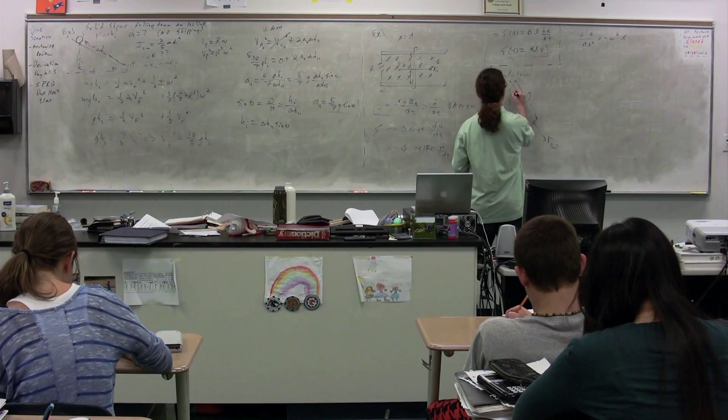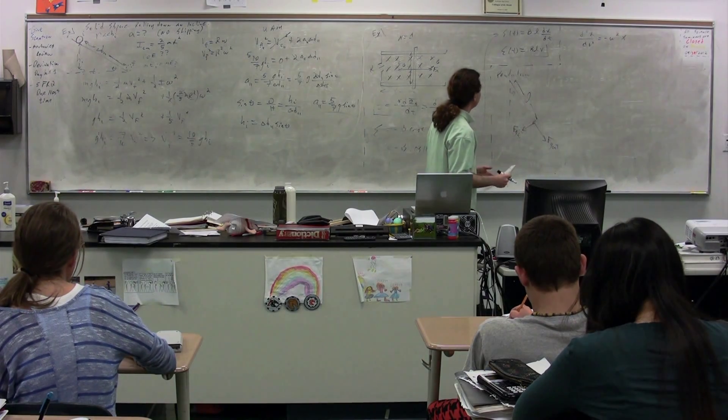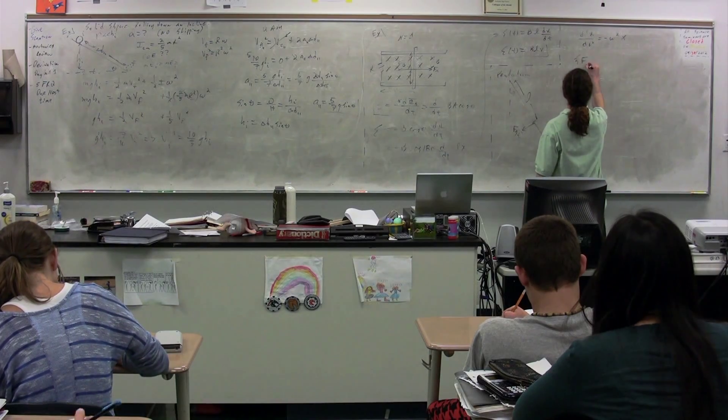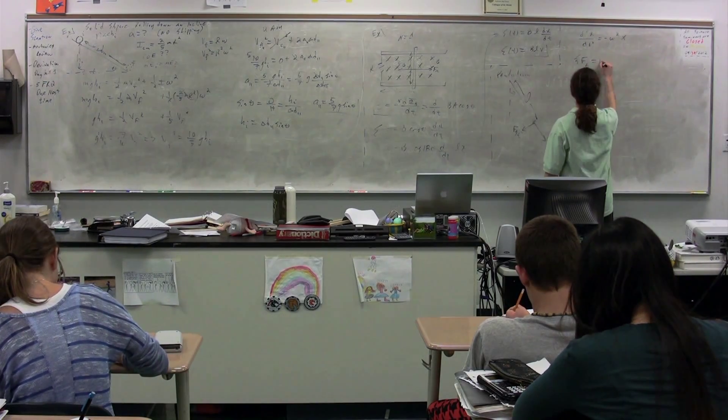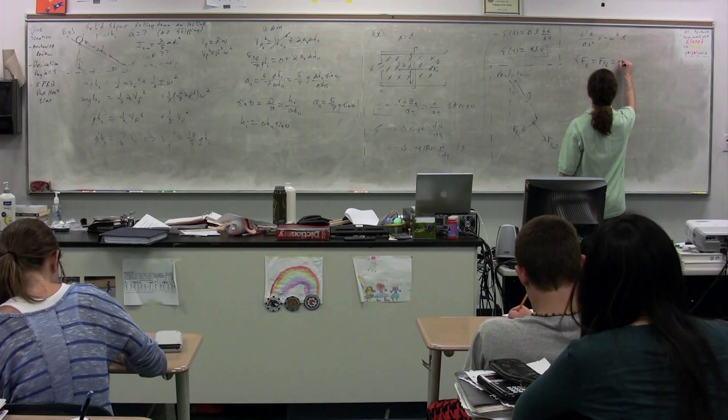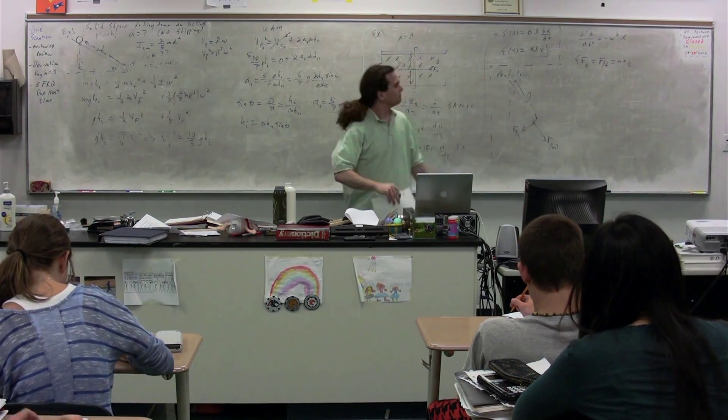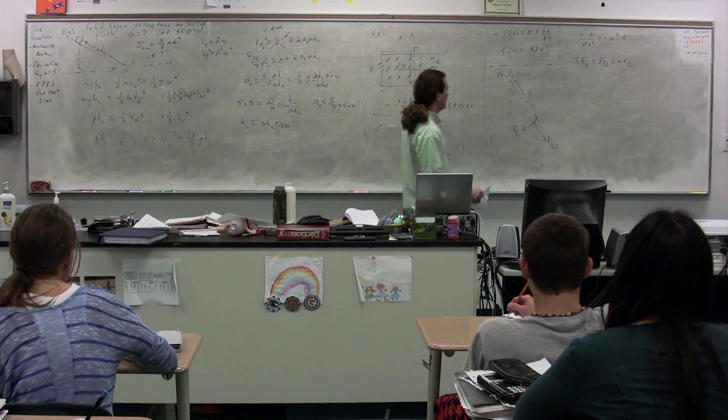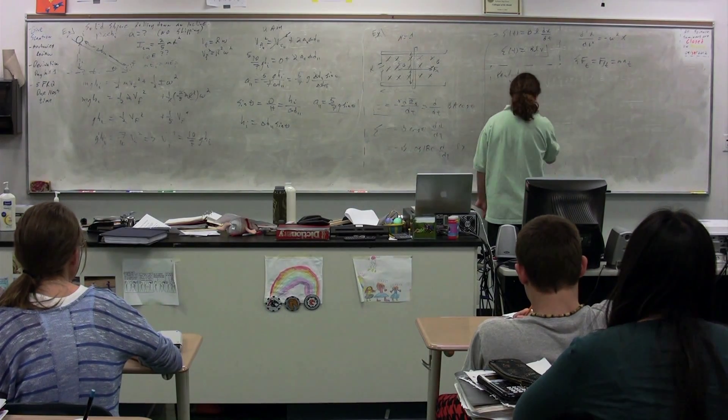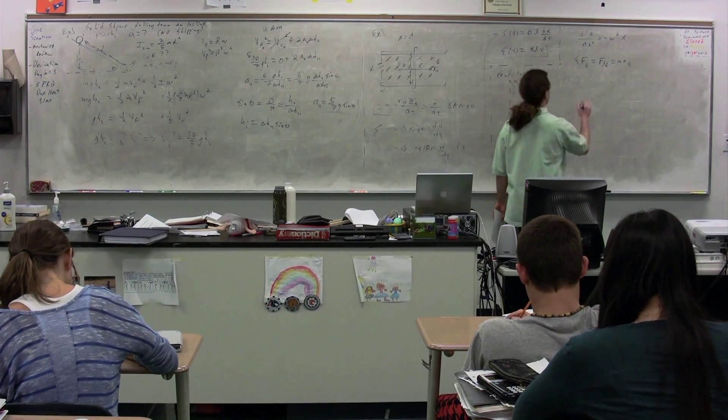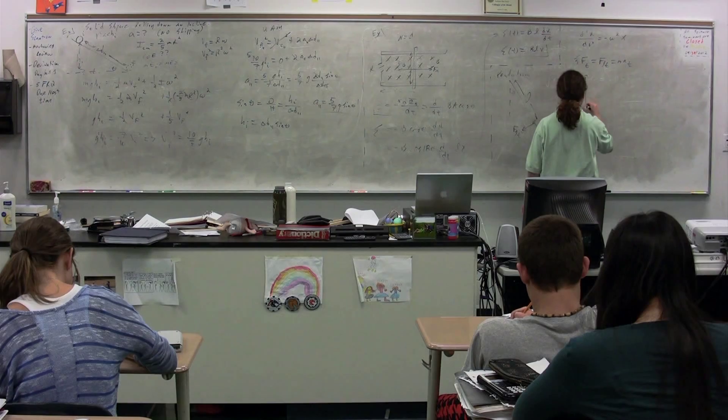All right, so we have this is our angle theta. If we're going to do this, let's sum the forces in the tangential direction. We're going to have the force of gravity tangential equals mass times the tangential acceleration. Force of gravity tangential. Notice the force of gravity tangential, if I were to draw this out, it would be, draw it right here. It would be straight down.